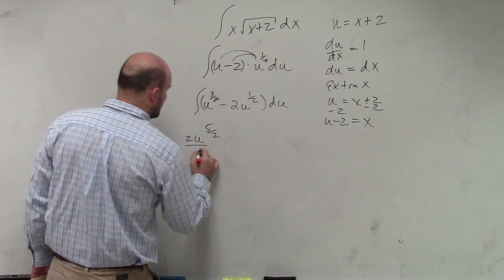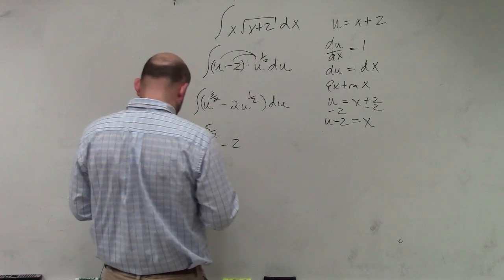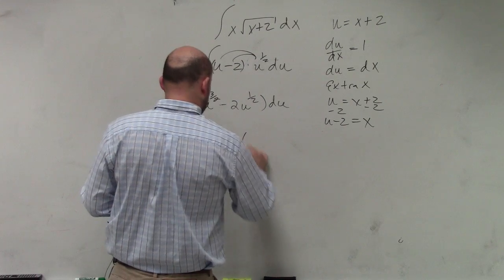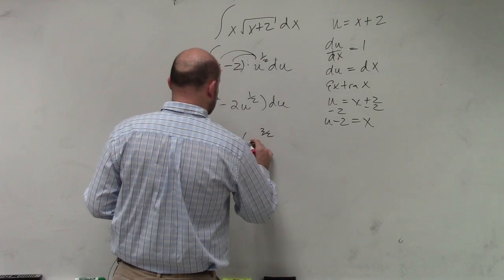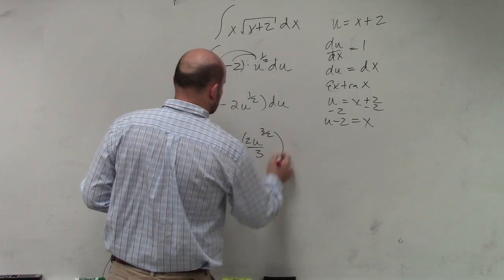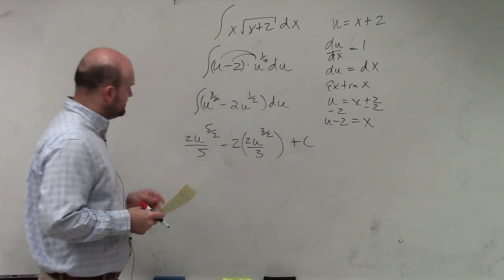Minus the 2. And integrate that is going to be u to the three-halves, times 2, and then plus c at the end.